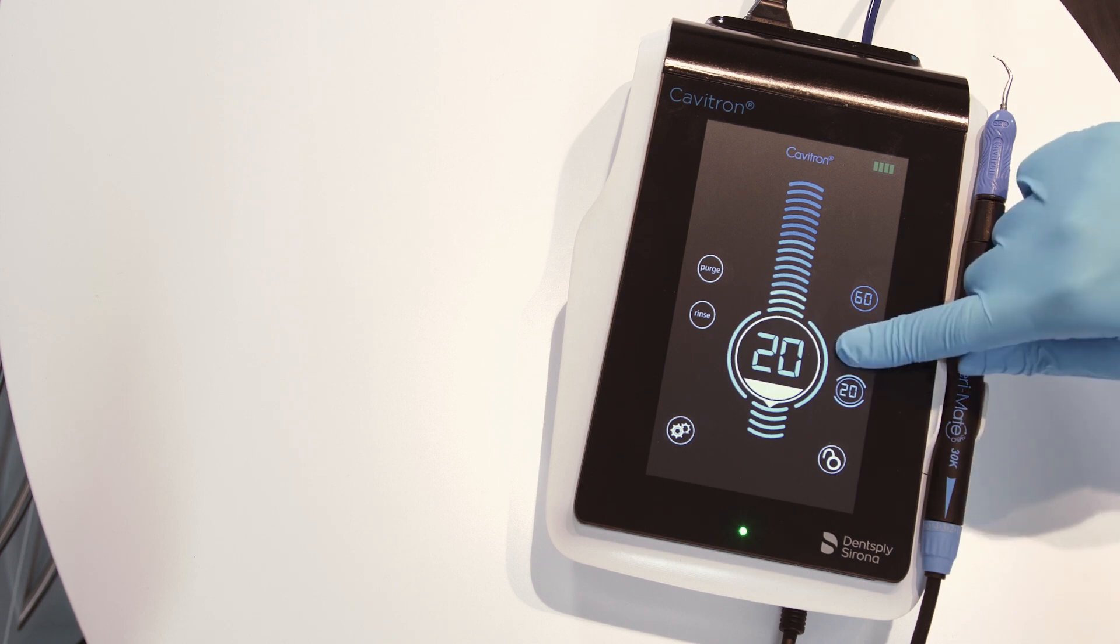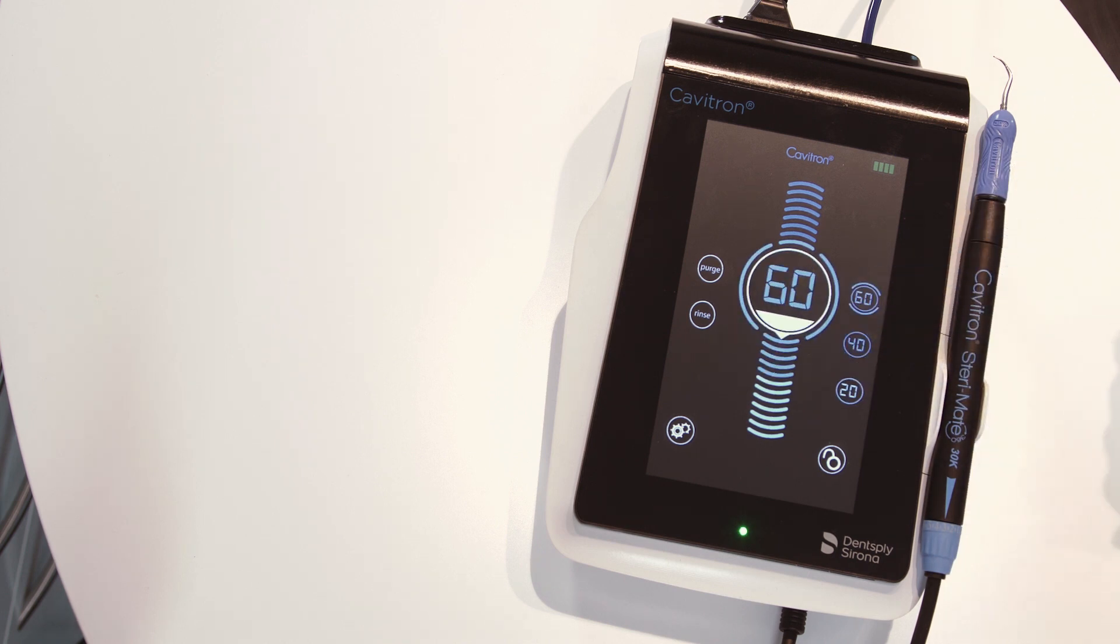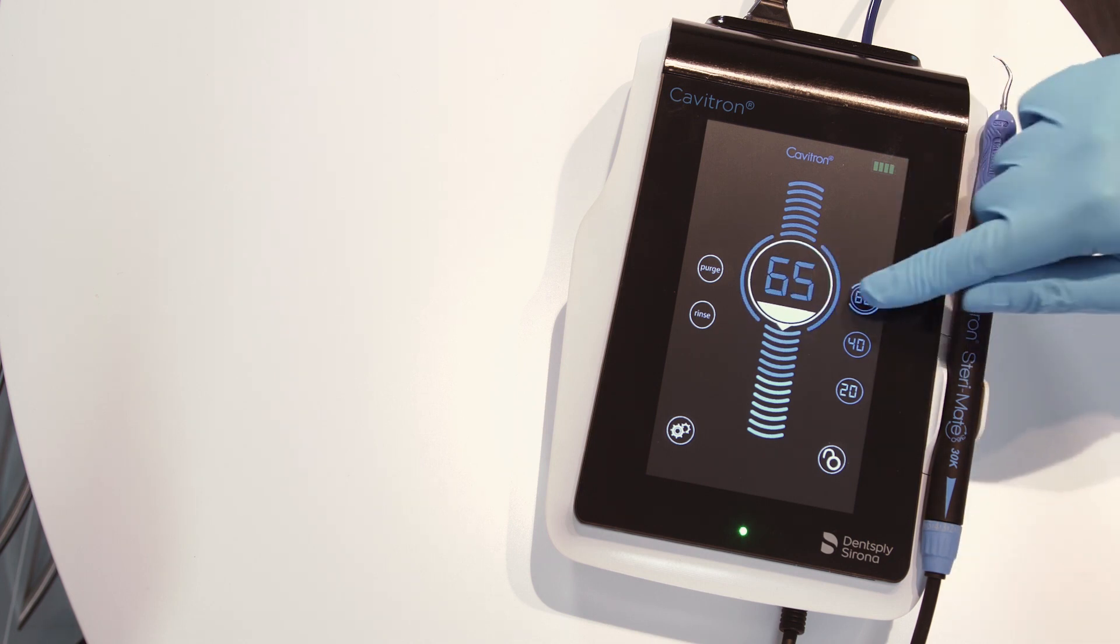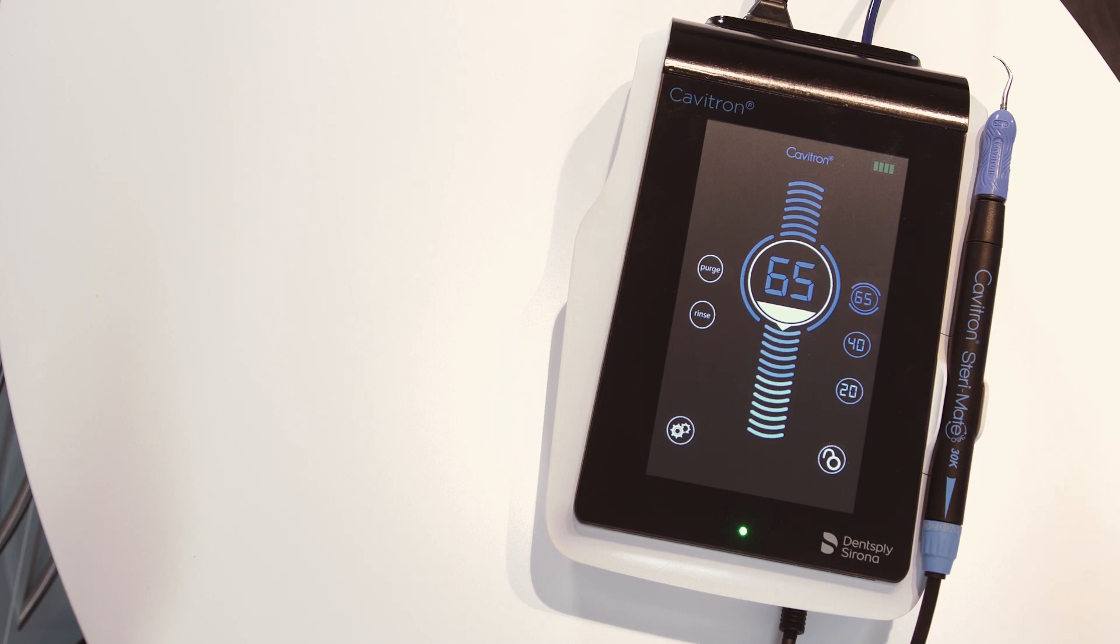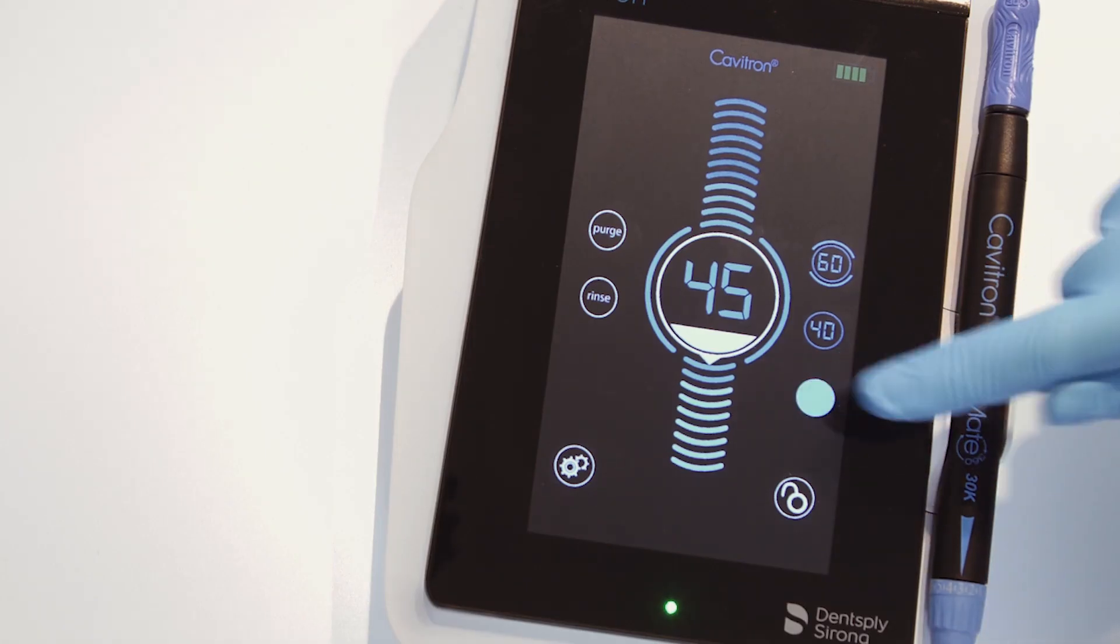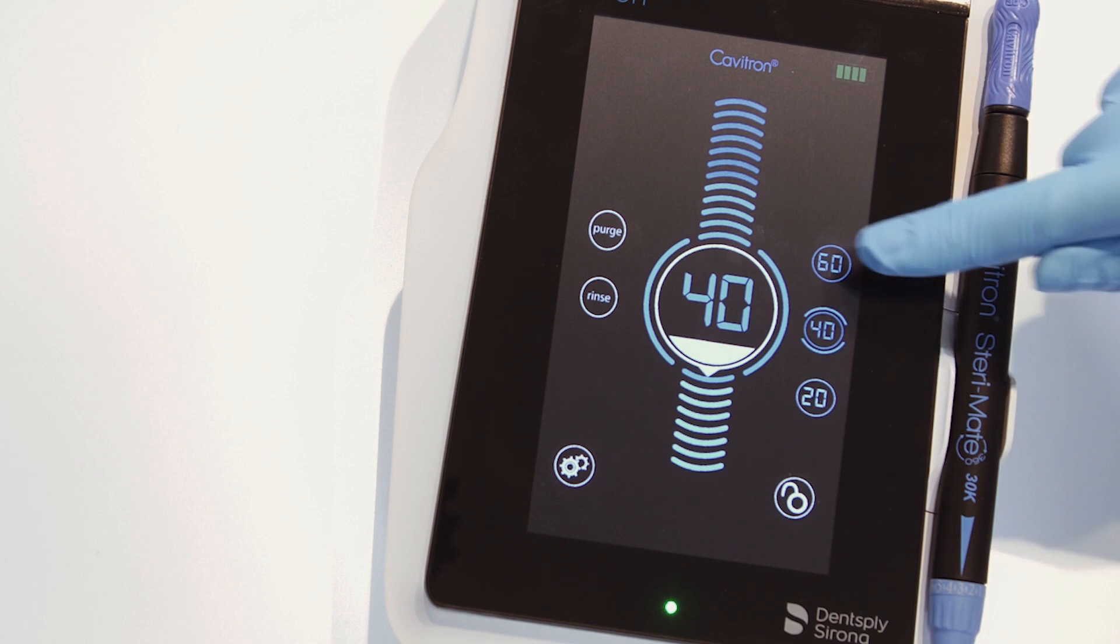The user can adjust the power level for increased power. Three power preset options are available. Please adjust the power level to your desired output, and press and hold the preset button until the sound indicator is heard to reset. The factory setting for the presets are 20, 40, 60.